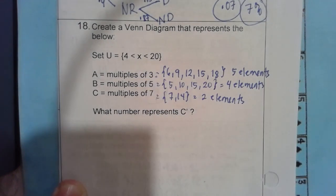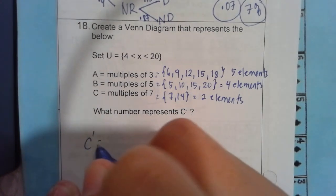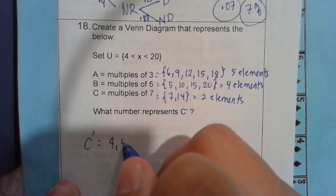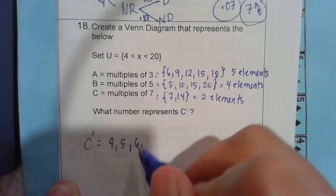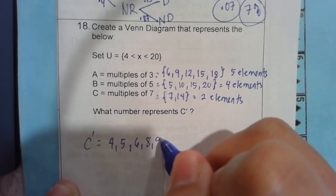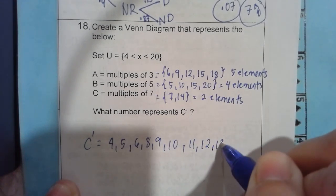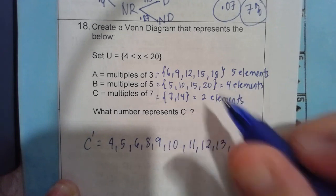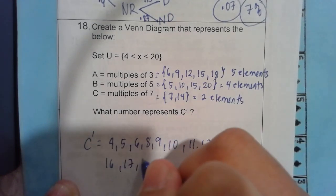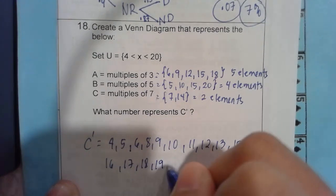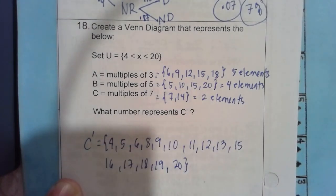So therefore, we can start including C prime is 4, 5, 6, we have 7 here, 8, 9, 10, 11, 12, 13, 14 is here, 15, 16, 17, 18, 19, 20. So that's the C prime.